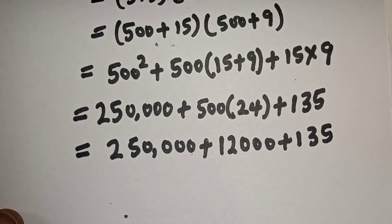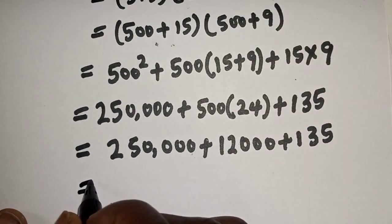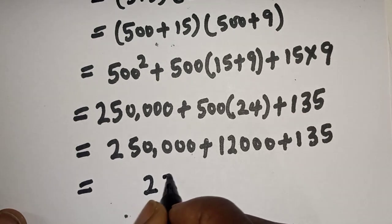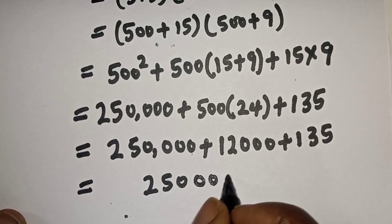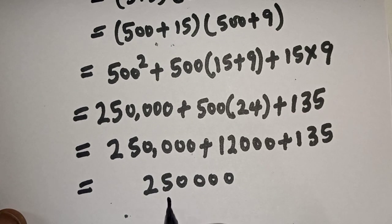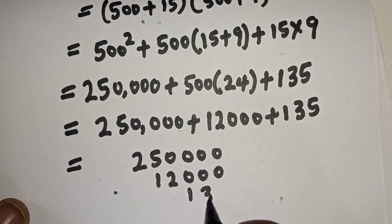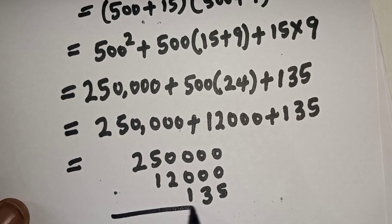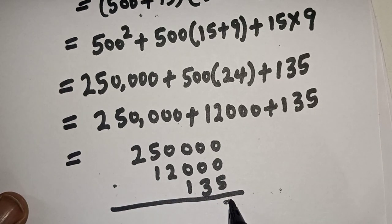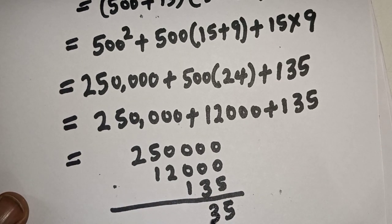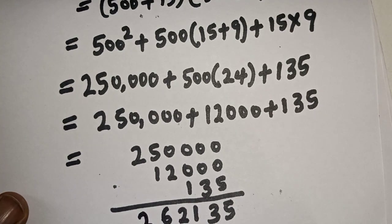Now let's add everything together. We have 250,000, then here is 12,000, and here is 135. We have 5, 3, 1, 2, 6, 2.